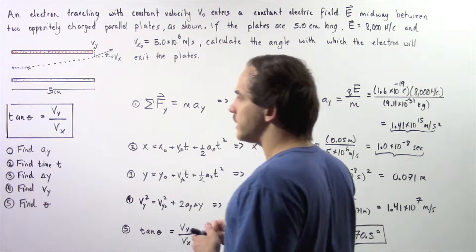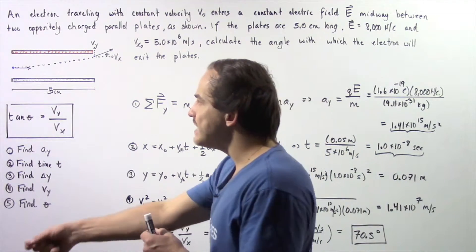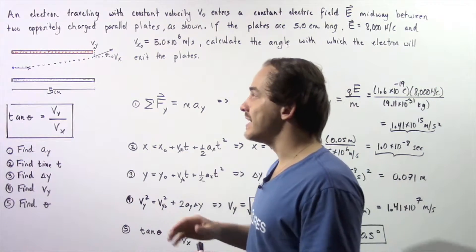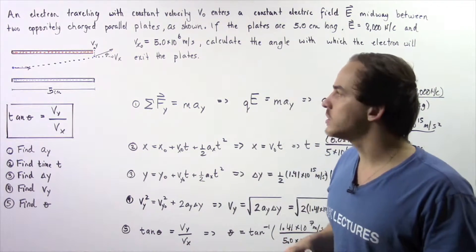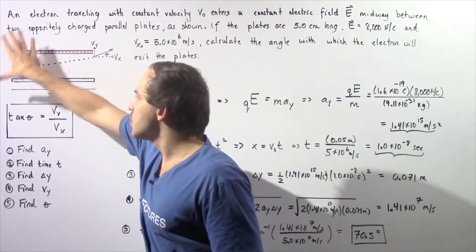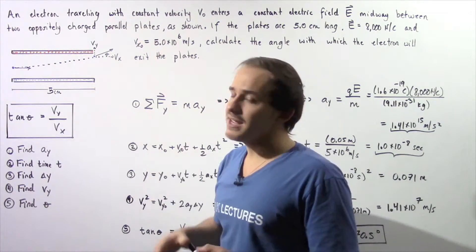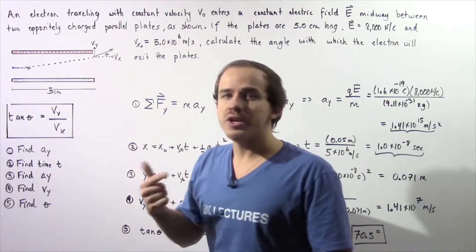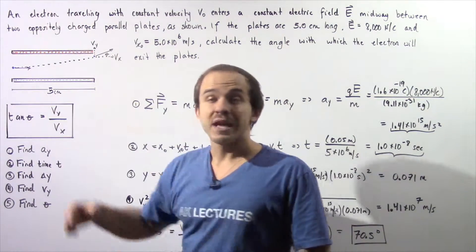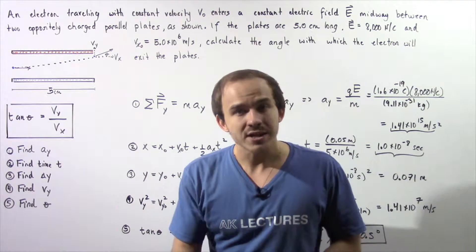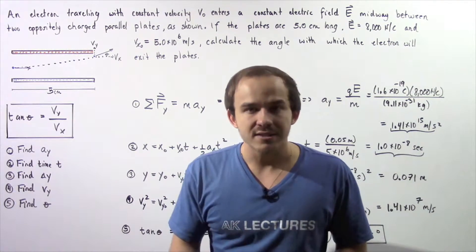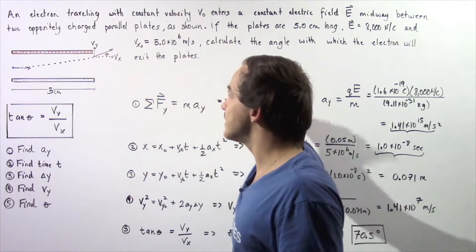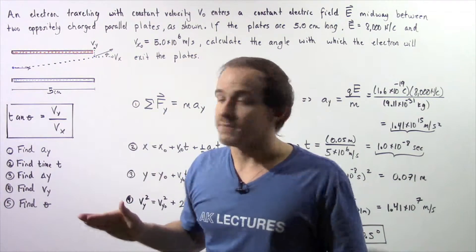Looking at our diagram, the electron initially enters the two plates with an initial velocity pointing along the x-axis and no velocity along the y-axis. As it travels from left to right, it gains a velocity along the y-axis because the electric field pointing downward creates a force pointing upward. Right before it exits the plates, it will have both an x-component and a y-component velocity.